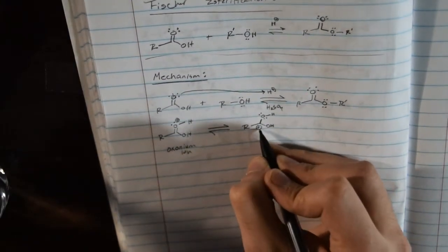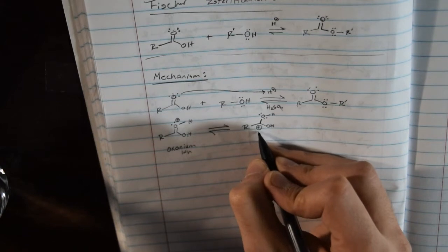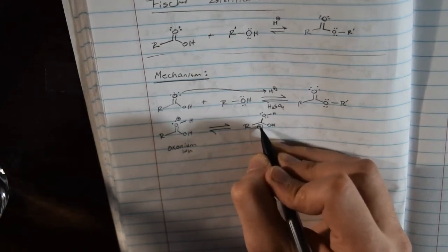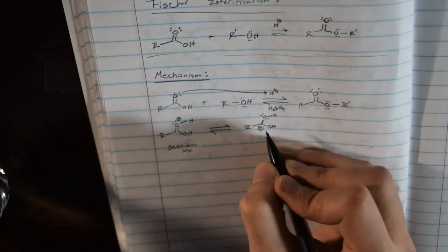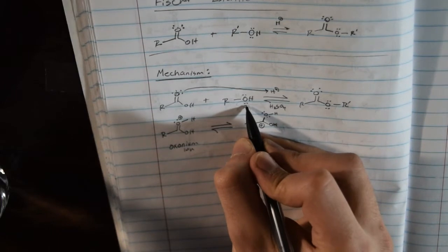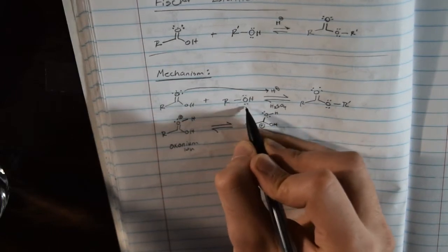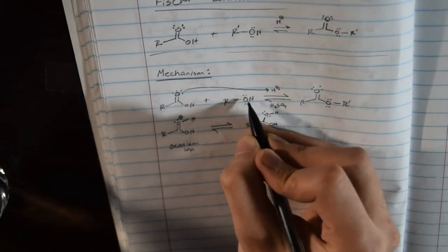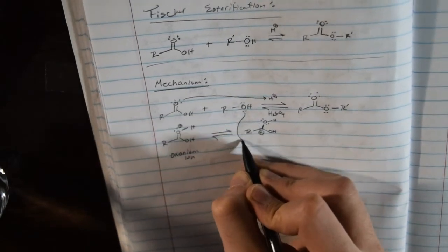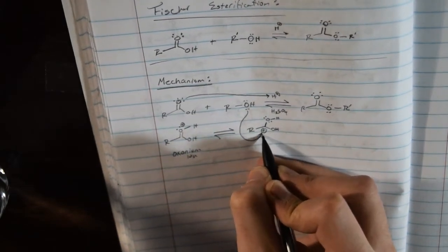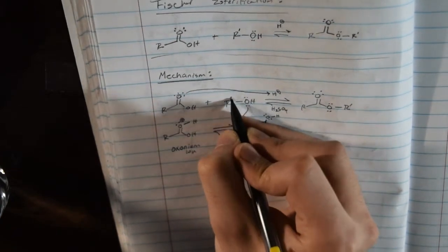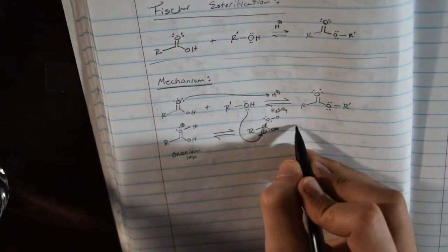It can resonate and form this structure, where the carbon has a positive charge — it's a very good electrophile. So what happens is that the electrons from the oxygen in the alcohol group attack from the back and attach onto this carbon, and we form this new structure.